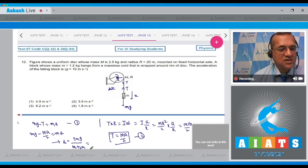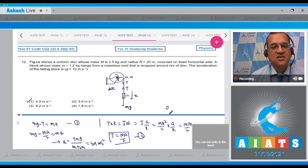Now fill the value capital M equal to 2.5 and small m equal to 1.2, you get this answer equal to 4.9 m per second square, which is your first option. So answer to this question is 1.